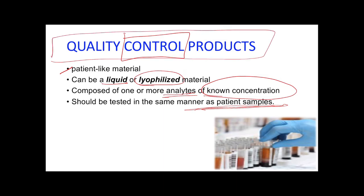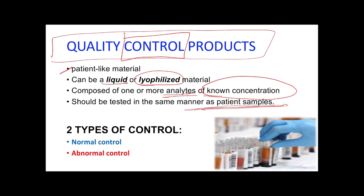The purpose of the quality control product is to validate the reliability of the test system and evaluate performance in the analytical phase. There are two types of controls: normal and abnormal control. Abnormal controls can be abnormally high or abnormally low. Normal control contains normal levels of the analyte, whereas abnormal control contains the analyte at a concentration above or below the normal range. Good laboratory practice requires testing both normal and abnormal controls for each test at least daily; some laboratories test controls per shift.